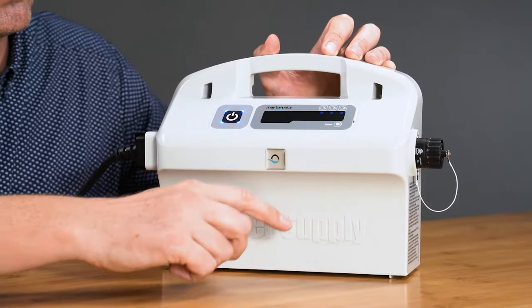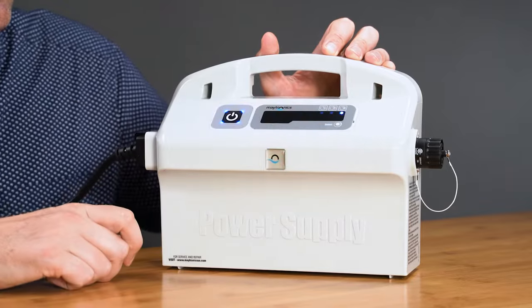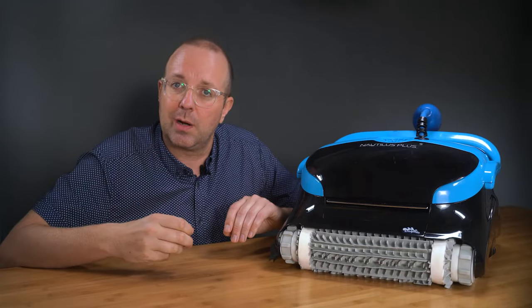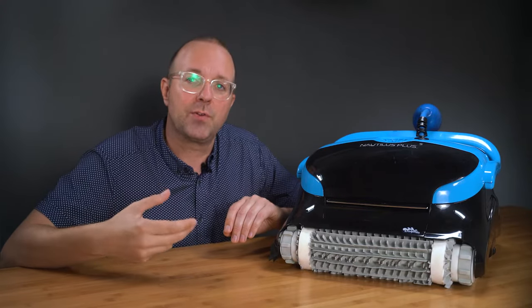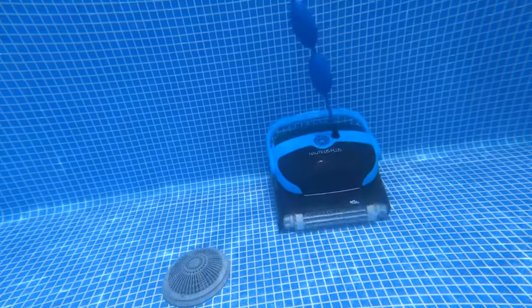At the start of each week, you can schedule it to clean every day, every two days, three days. But it only has one cleaning cycle option that's two hours long. So if your pool needs more than a two-hour cleaning, you'll have to manually start the CC Plus again.